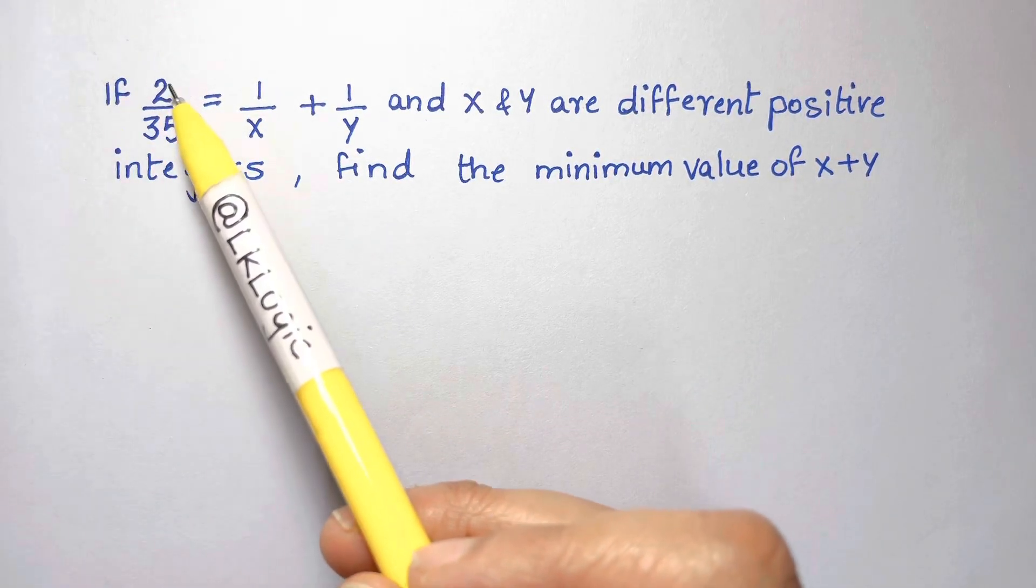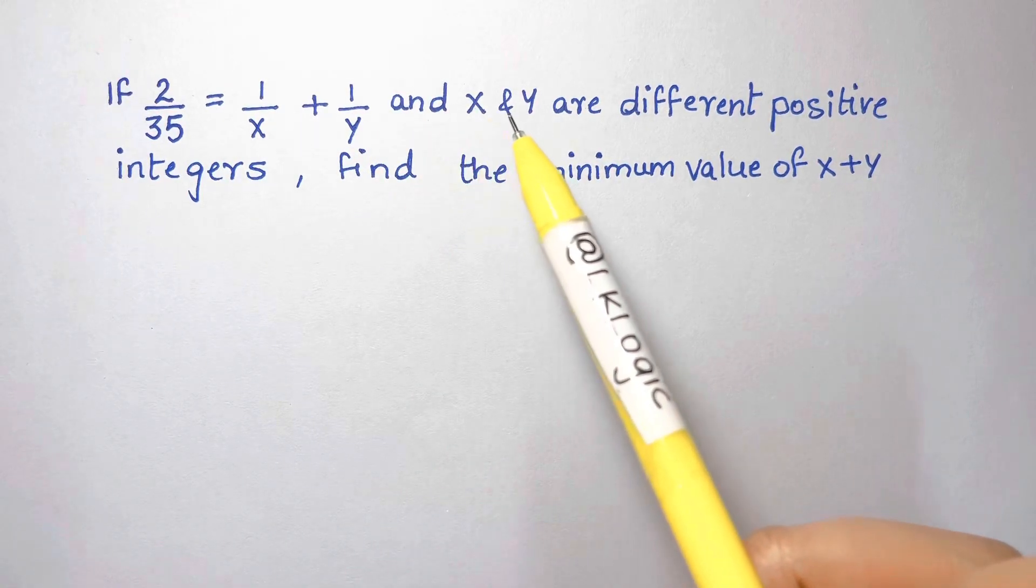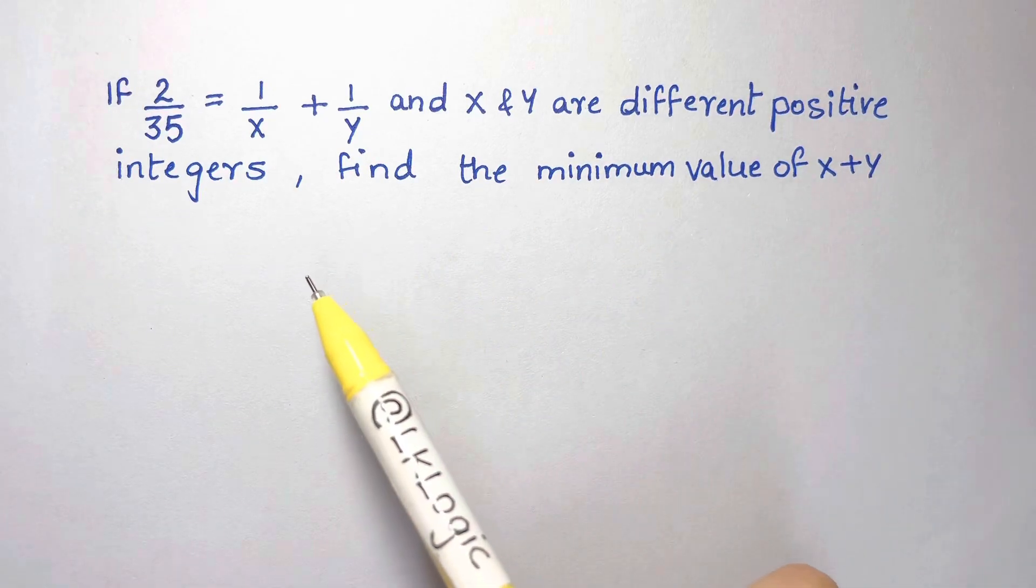In this question we have if 2/35 equals 1/x plus 1/y and x and y are different positive integers, find the minimum value of x plus y.